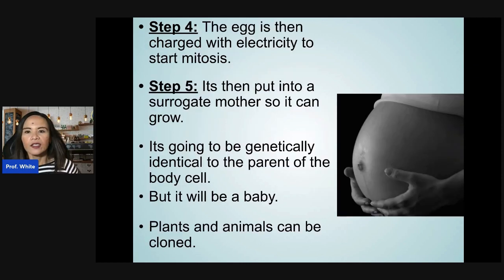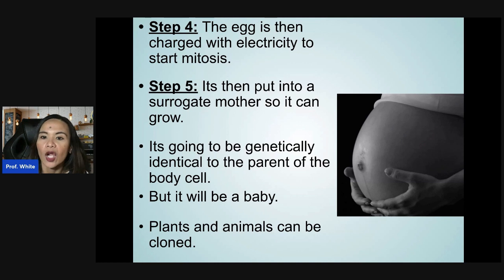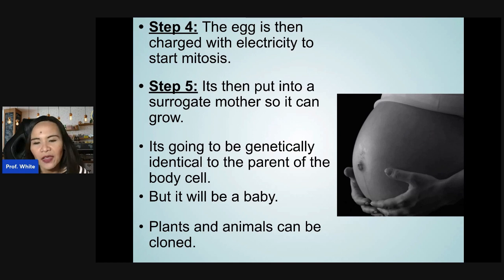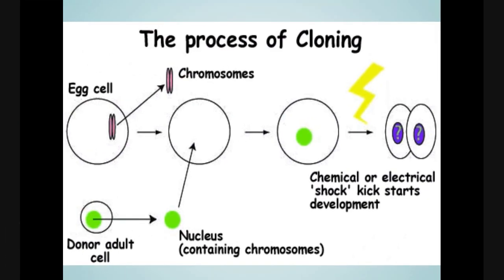The egg is then charged with electricity to start mitosis, kind of like a jumpstart. In step five, it is placed into a surrogate mother to grow. It will be genetically identical to the parent of the body cell, but it will be a baby. Plants and animals can technically be cloned, but ethically that's debatable. Here is a diagram of the cloning process.